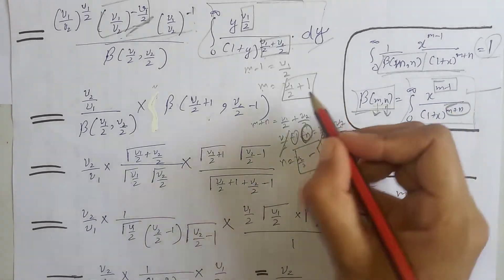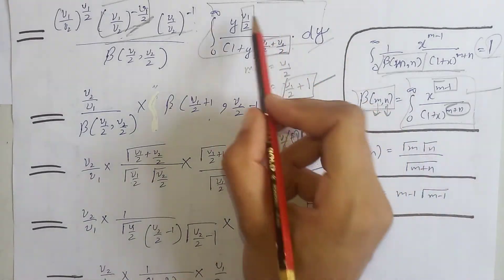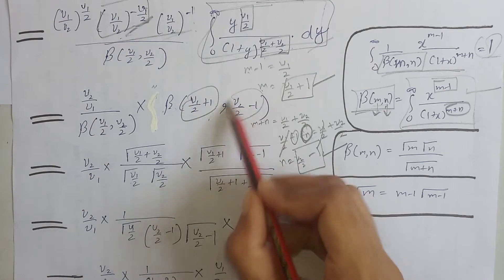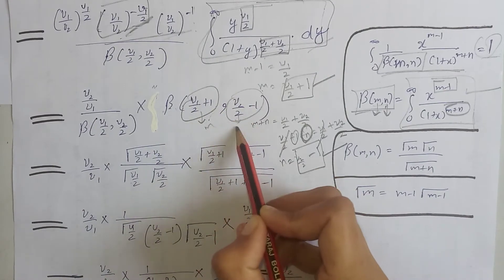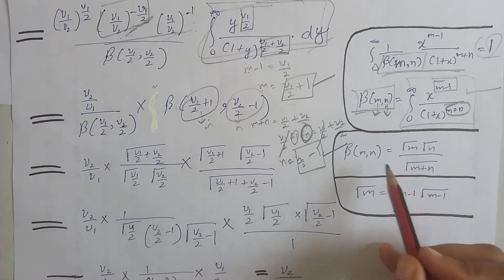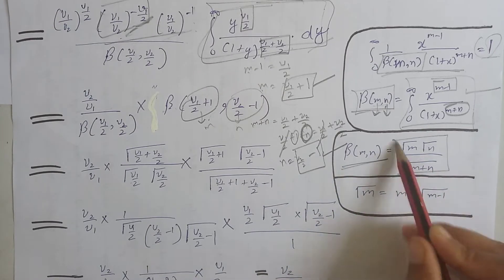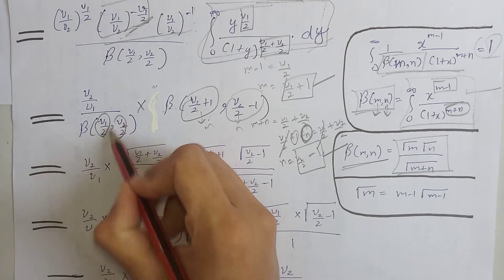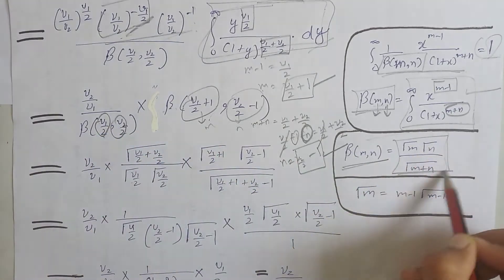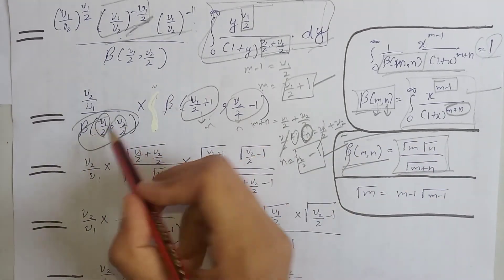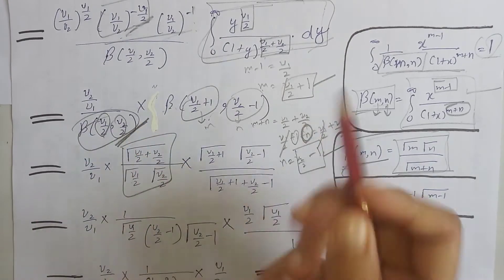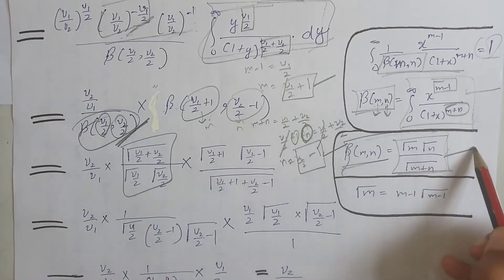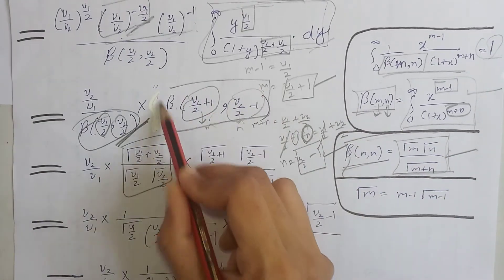Now that we have found m and n, the whole integral equals Beta(m, n). We expand the beta function in terms of the gamma function. On considering the appropriate m and n and applying the formula, we write the beta function in terms of gamma functions for both expressions.